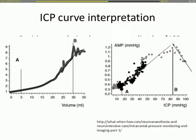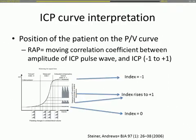This can be expressed mathematically: there is a correlation between amplitude and the absolute value of ICP up to a certain point. Beyond that, decompensation begins, and you get a negative association when all compensatory mechanisms are lost. This RAP index ranges between minus 1 and plus 1, and should be around 0 in normal circumstances. In the steep part of the curve, the index rises. When the RAP index approaches plus 1, you are close to decompensation; when it becomes negative, it may be too late.